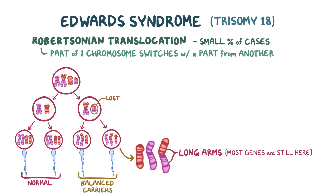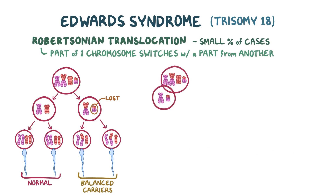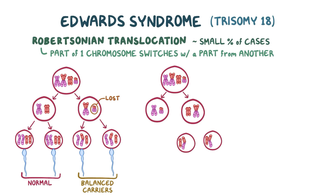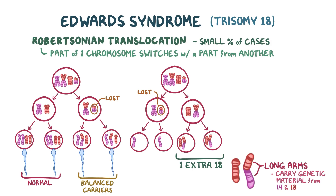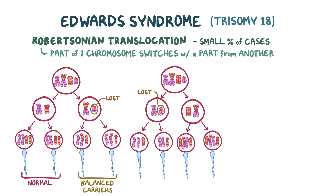Balanced carriers usually don't have any symptoms. Now let's say the normal chromosome 14 ends up with the short arm, and normal chromosome 18 with the long arm. You get two cells with the normal and long arm, and two cells with the normal and short arm, which is usually lost. So these ones have one extra chromosome 18 since the long arms carry most of the genetic material for both chromosomes 14 and 18, and these ones are missing chromosomes. Combine these with the other parent again, and you have trisomy 18 here, and monosomy 18 here, since this one is missing a chromosome 18.